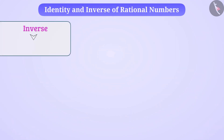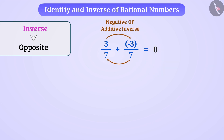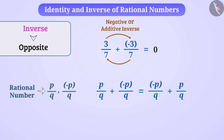Inverse means opposite. Let's understand its importance in mathematics. Consider rational number 3/7. If we add (-3/7) to it, we get 0. Adding 3/7 and (-3/7) makes the value of each other 0. Therefore, these are the additive inverse of each other. To summarize, if the addition of any two numbers is 0, then these two numbers are additive inverse of each other.